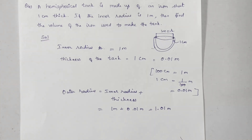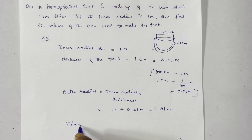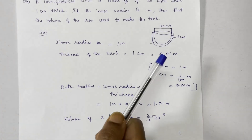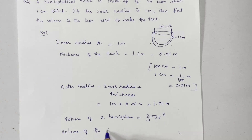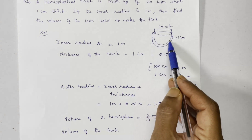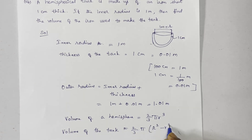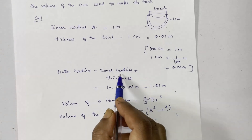The volume of the iron used to make the tank uses the hemisphere volume formula: 2 by 3 pi r cubed. The volume of iron equals 2 by 3 into pi into capital R cubed minus small r cubed, which is 2 by 3 into 22 by 7 into capital R cubed minus small r cubed.